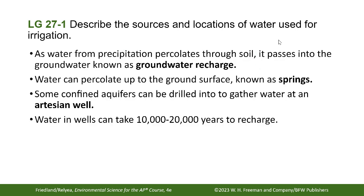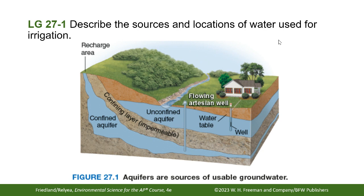As precipitation percolates through the soil, it passes into the groundwater — this is known as groundwater recharge. Water can also percolate up to the ground surface, forming springs. Confined aquifers can be drilled into at an artesian well. Water in wells can take 10,000 to 20,000 years to recharge. A confined aquifer has only one recharge opening since it's underneath an impermeable layer, whereas an unconfined aquifer recharges from any water that seeps into the ground.